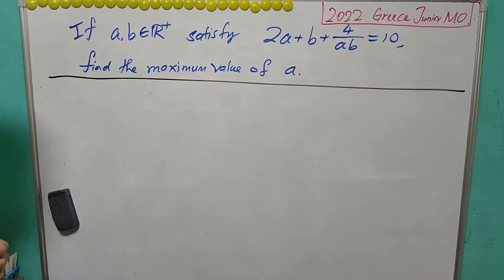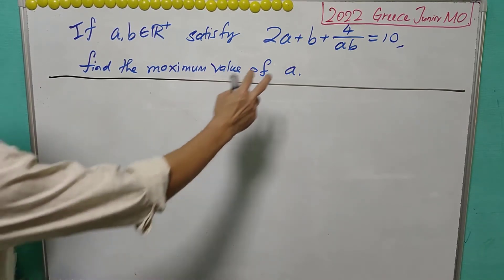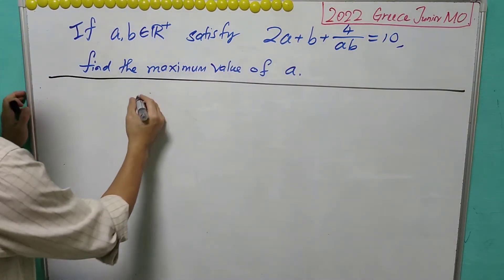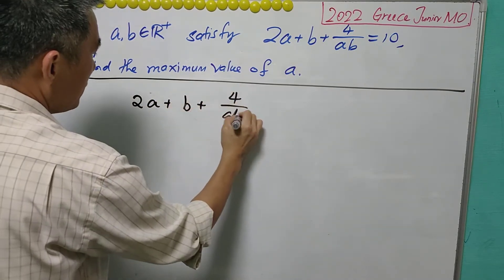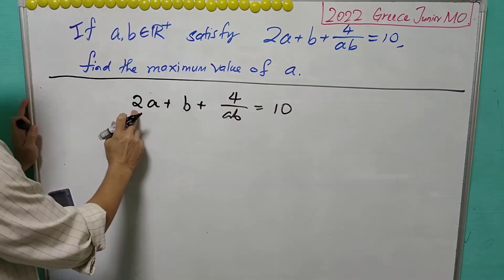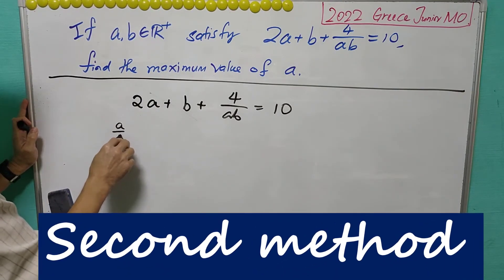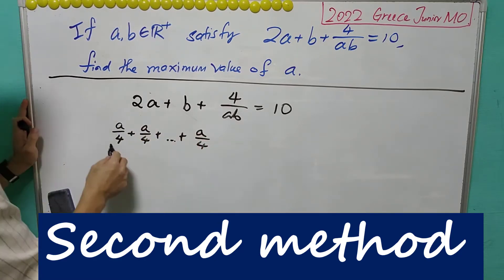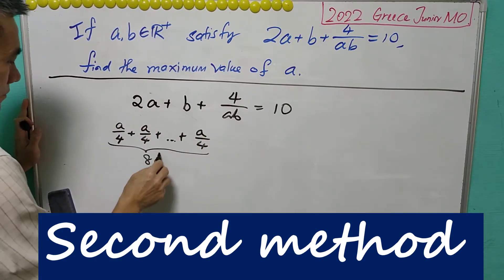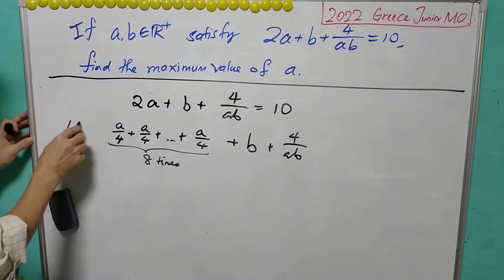In the previous discussion we found that 4 is the maximum value of A, and when A equals 4, B equals 1. Now for the second method, we play around with 2A plus B plus 4 over AB equals 10. Instead of writing 2A, I'll write it as A over 4 repeated 8 times — adding them up still gives 2A — so altogether we have 10 terms summing to 10.